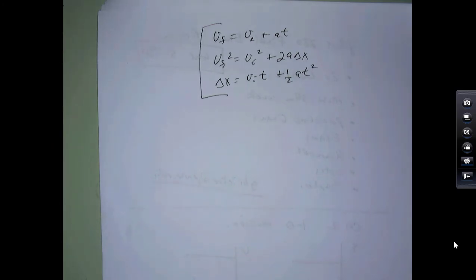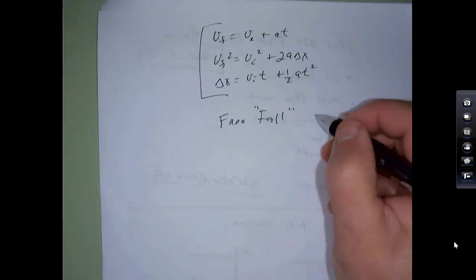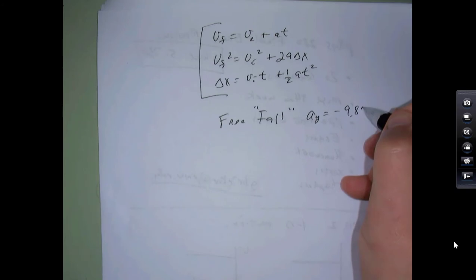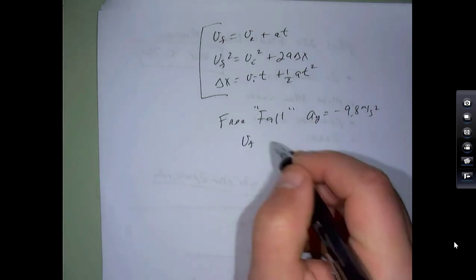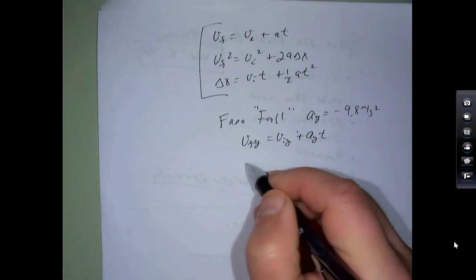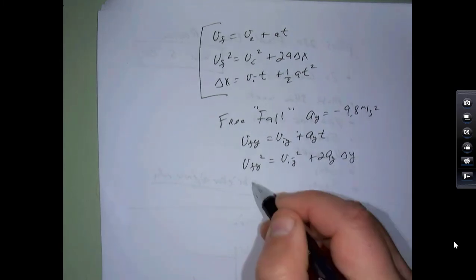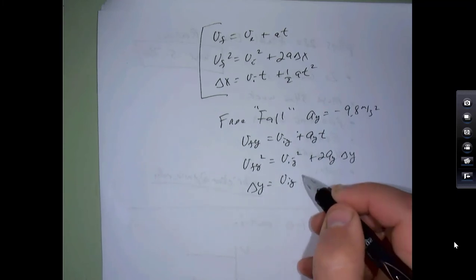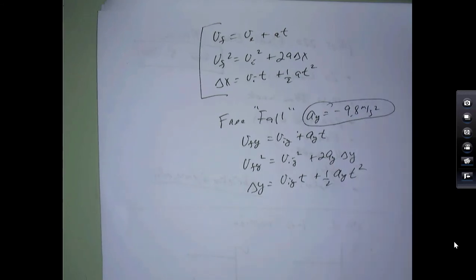With these problems, it's good to write down what you know and what you're looking for. We also had a special case: free fall, meaning under the influence of gravity, where the acceleration in the y-direction is -9.8 m/s². I wrote the equations in terms of x, but you can do the same in terms of y: v_fy = v_iy + a_y·t, v_fy² = v_iy² + 2·a_y·Δy, and Δy = v_iy·t + ½·a_y·t². The nice thing about free fall is you already know the acceleration — it's -9.8 m/s².